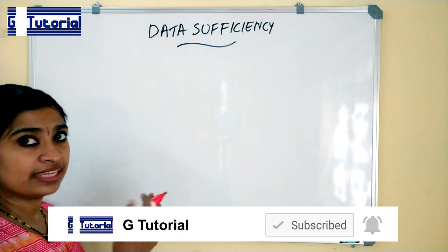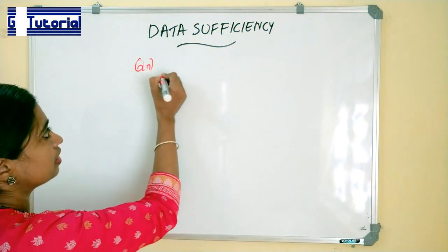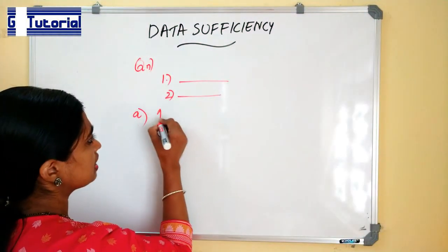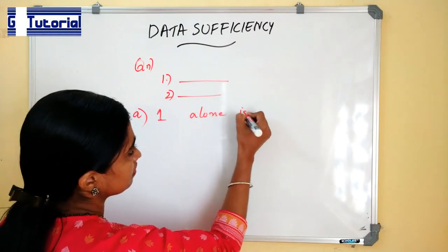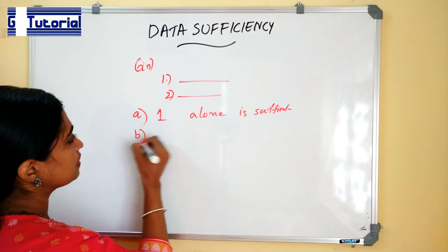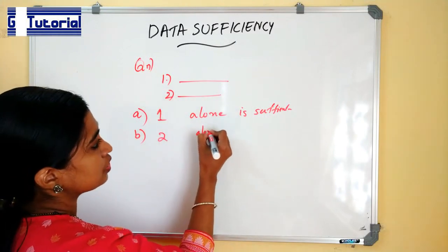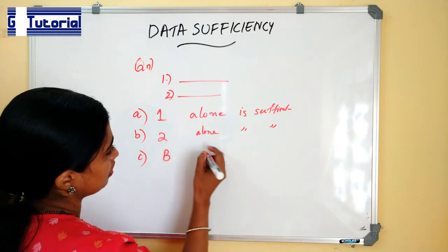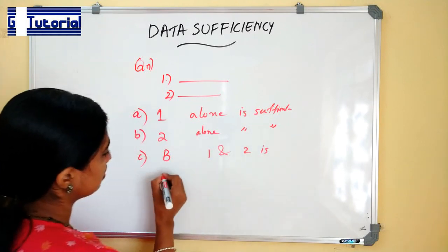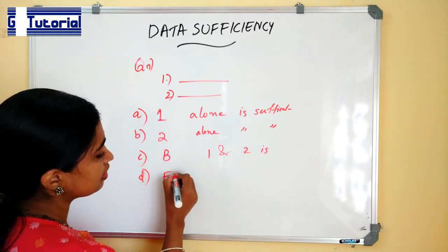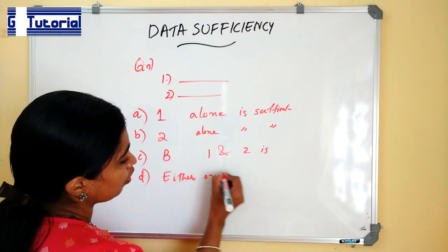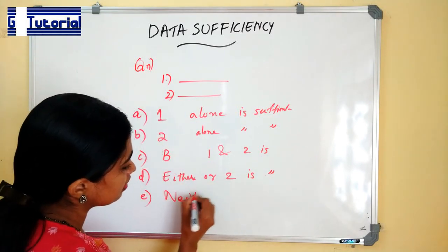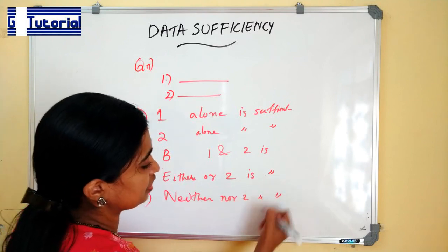Questions from data sufficiency are like: you are given a question and there will be two statements. The options will be like — statement one alone is sufficient to answer the question; statement two alone is sufficient to answer the question; both one and two are sufficient; either one or two is sufficient; and option E is neither one nor two is sufficient.